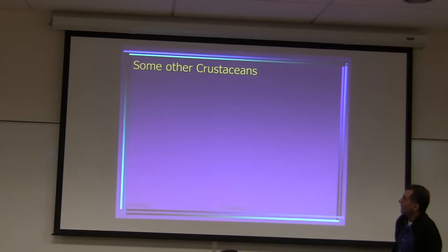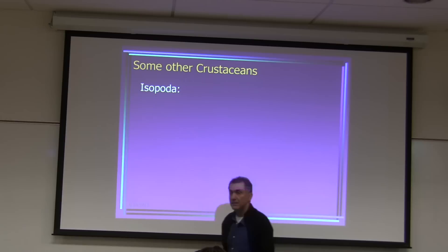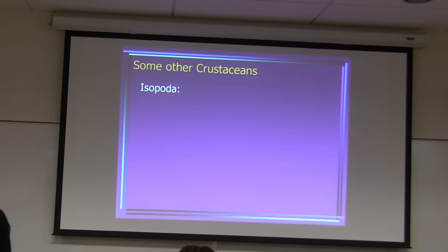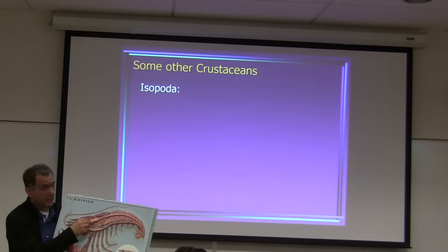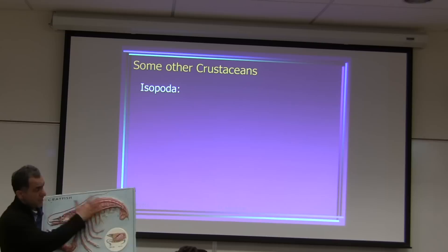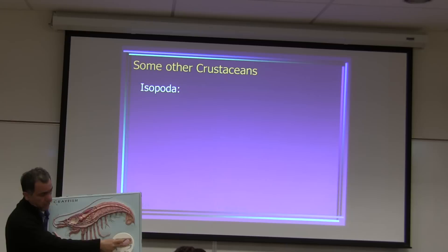A student asks about the green gland for lab practical. You can see the green gland on this model — right here. The rostrum, compound eyes, green gland, and stomach are all labeled. The flexor and extensor muscles are here. The gills are shown here. The chelipede, chela, and swimmerets are also labeled.